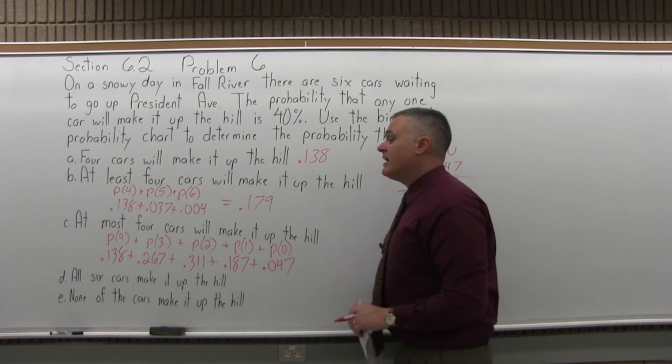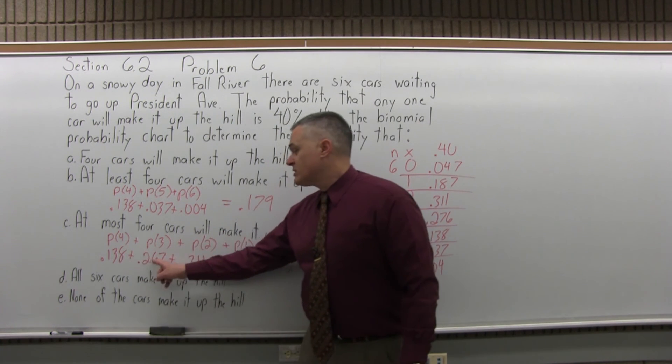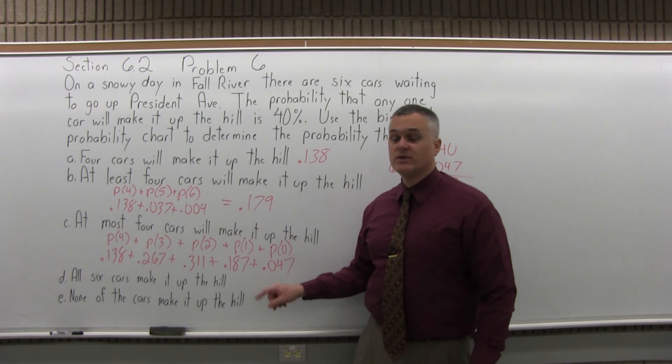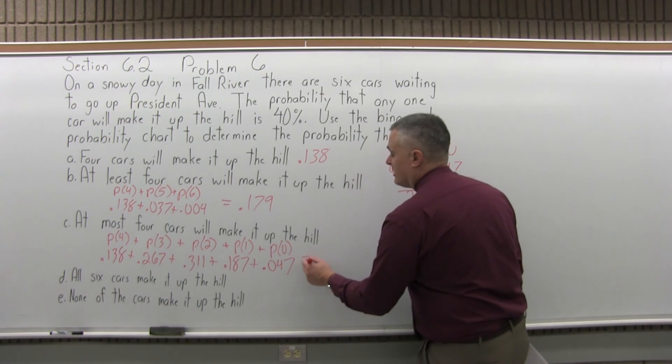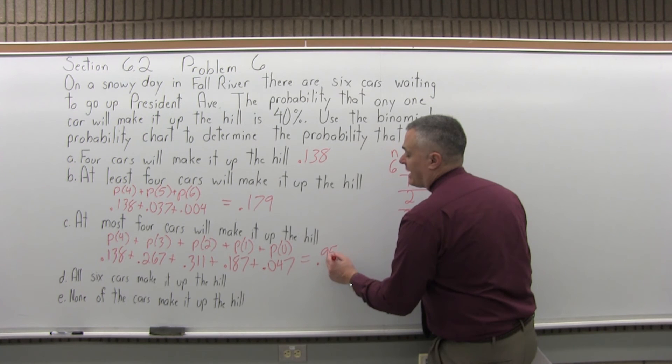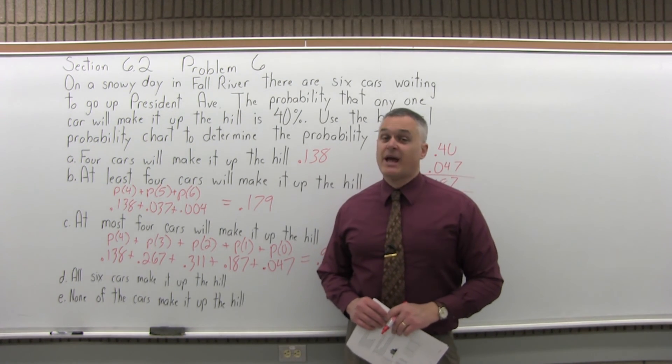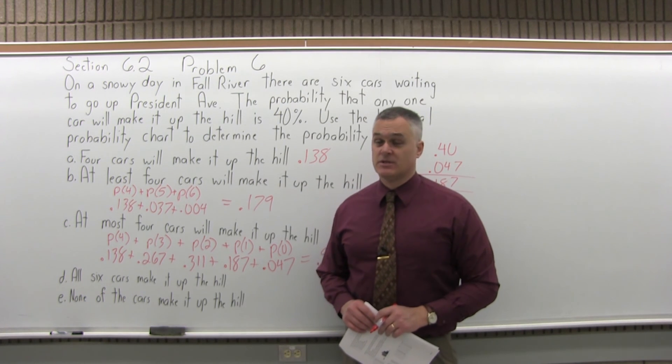If I add .138 plus .276 plus .311 plus .187 plus .047, the answer comes out to .959. So, it's about a 96% probability that, at most, four cars will make it up the snowy hill.